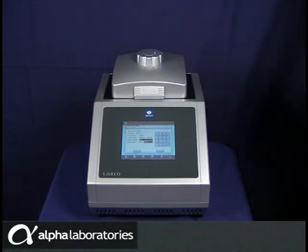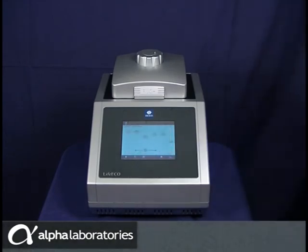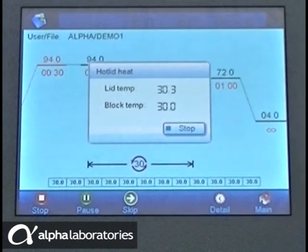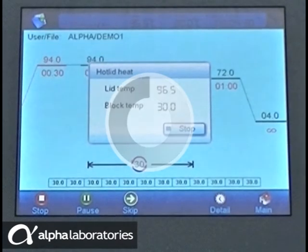The process starts and you will see the lid temperature start to rise. Once the lid has reached its target temperature, the protocol is initiated. The block is brought to temperature and timing of each step commences. The graphical display highlights the current step at every stage of the protocol and there is an option to switch to a summary detail view.